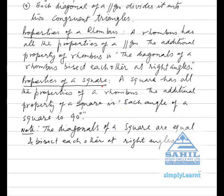Properties of a square. A square has all the properties of a rhombus. The additional property of a square is that each angle of a square is 90 degrees. Note: the diagonals of a square are equal and bisect each other at right angles.